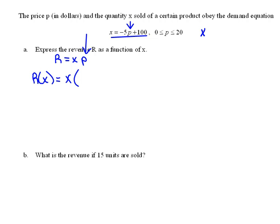So instead of X equals negative 5P plus 100, let's solve this for P. So if I move 100 over to the other side, we have X minus 100 equals negative 5P. And then dividing everything by negative 5, we get negative 1 fifth X plus 20 equals P.